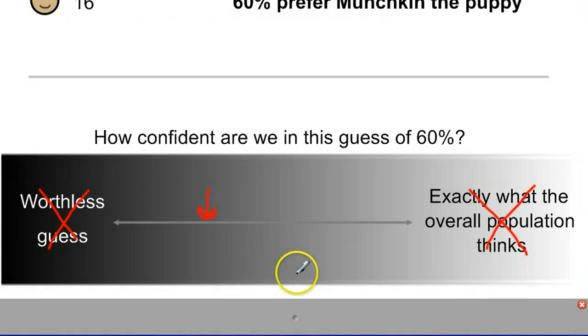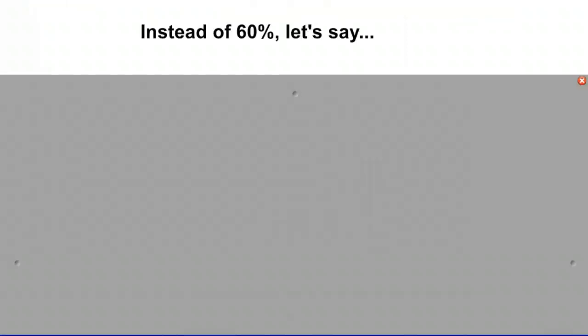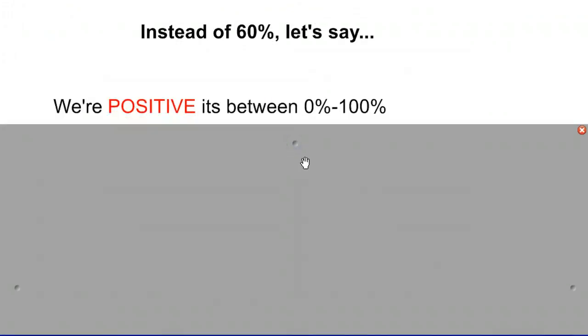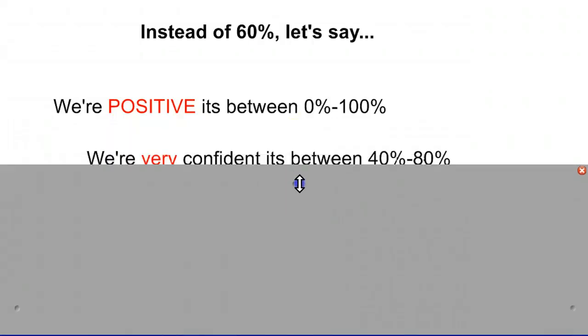If all we had was our quick intuition of how solid is our guess, we would always be in the gray. The beauty of statistics is that it lets us quantify which part of the gray zone we're in so that we can actually give a reasonable interval. Instead of 60%, we could say that we're positive it's between 0 and 100%. There's no doubt in our minds it's between 0 and 100%. Well, that's pretty useless. So let's move on.